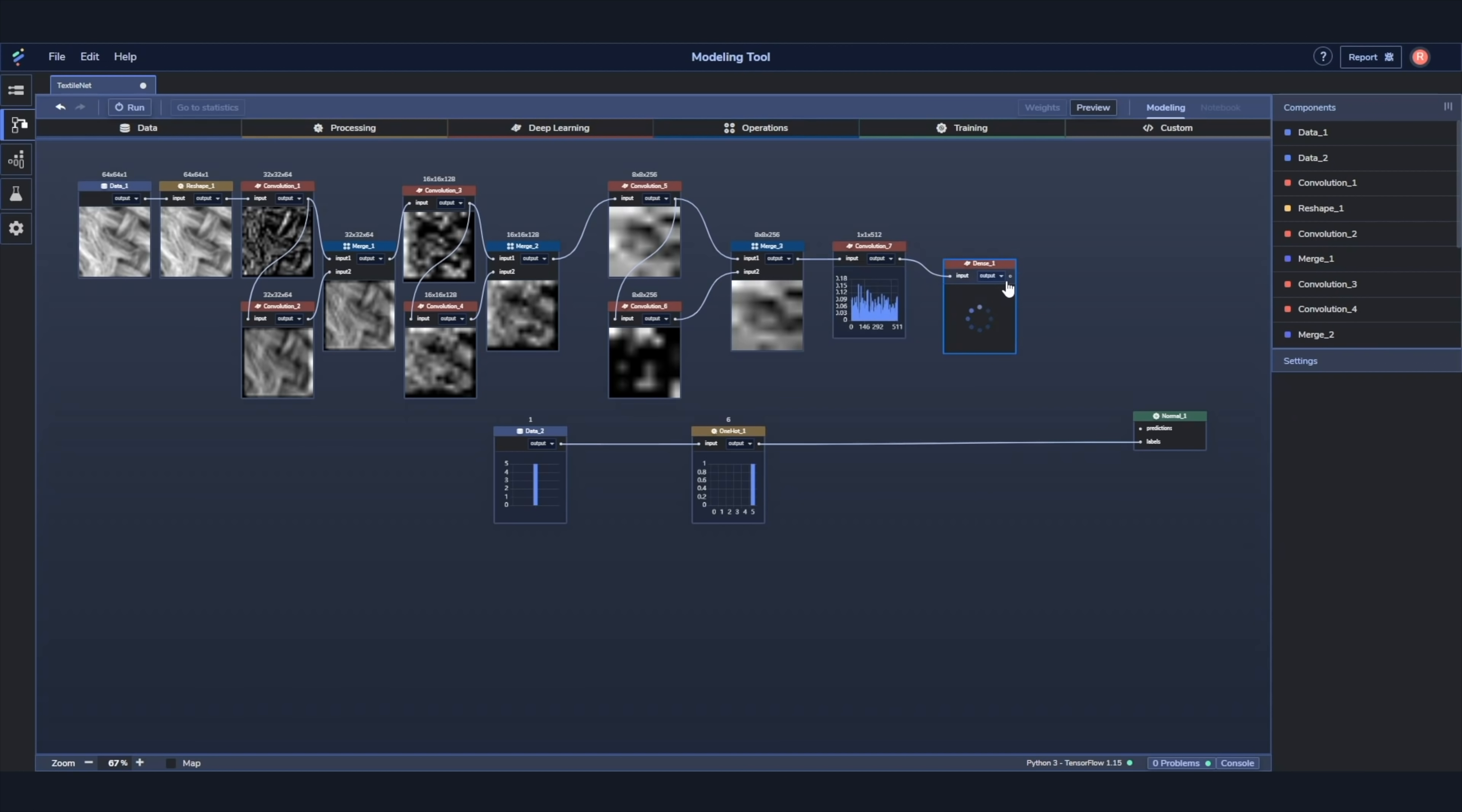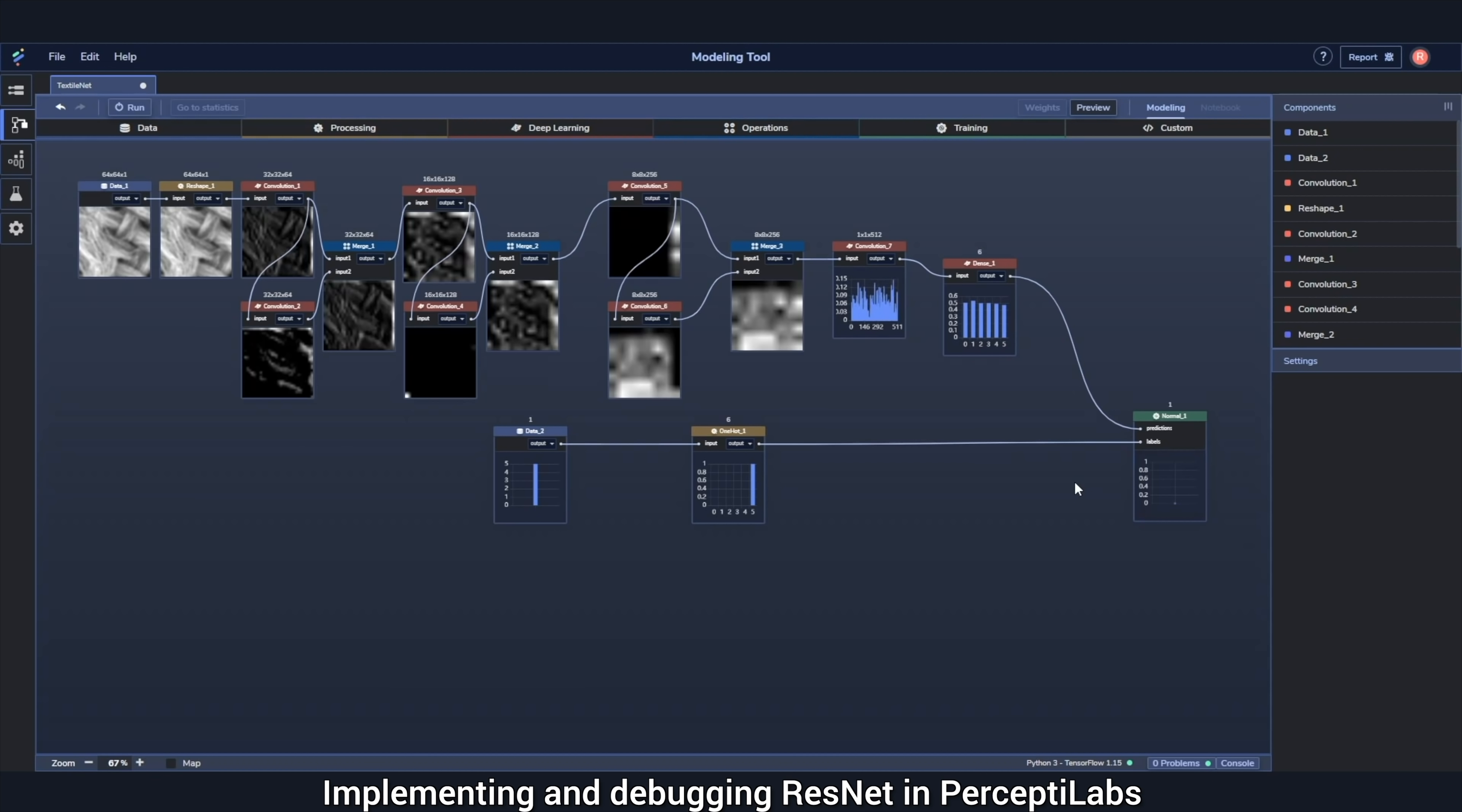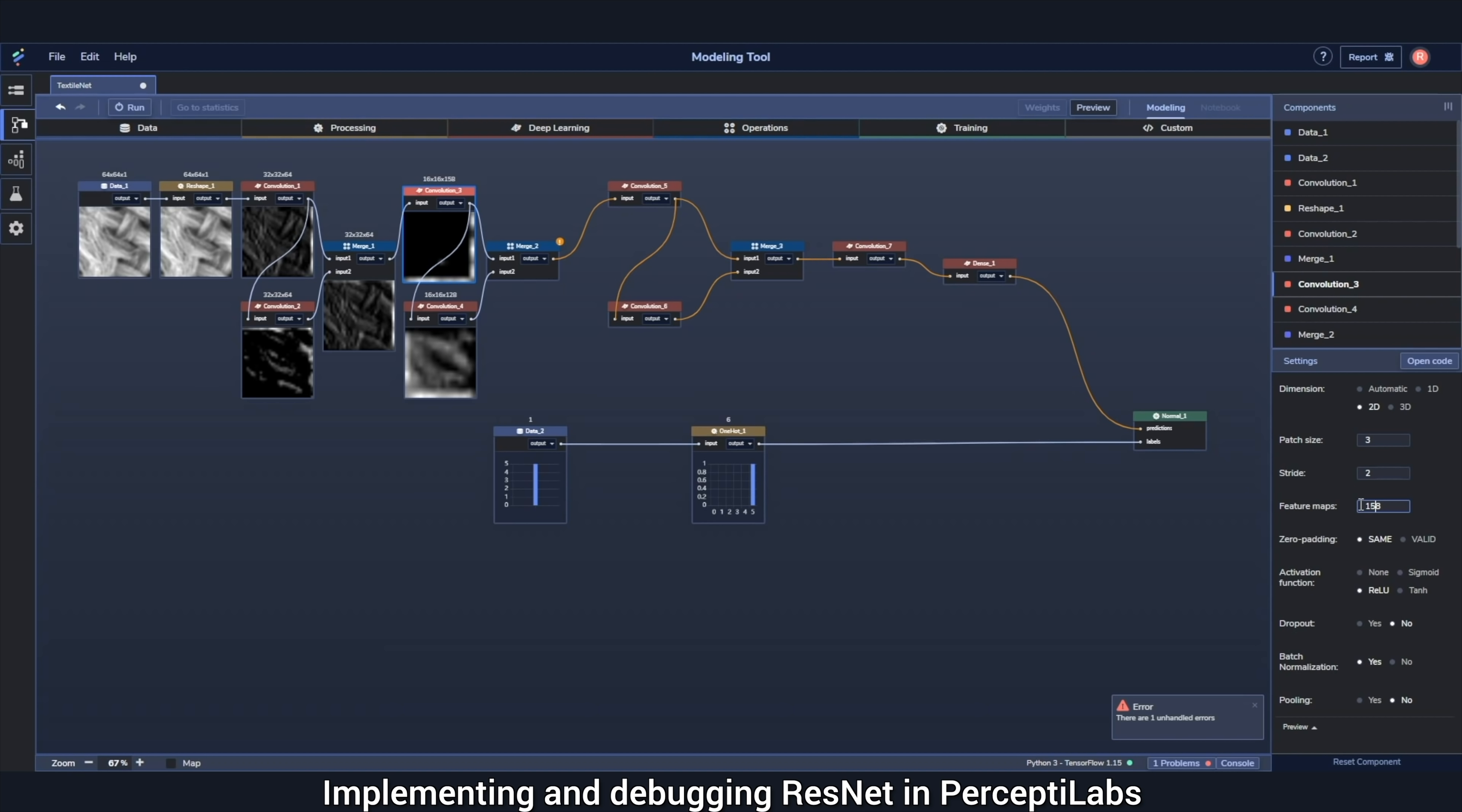PerceptiLabs is a visual API for TensorFlow, carefully designed to make machine learning as intuitive as possible. This gives you a faster way to build out models with more transparency into how your model is architected, how it performs, and how to debug it.